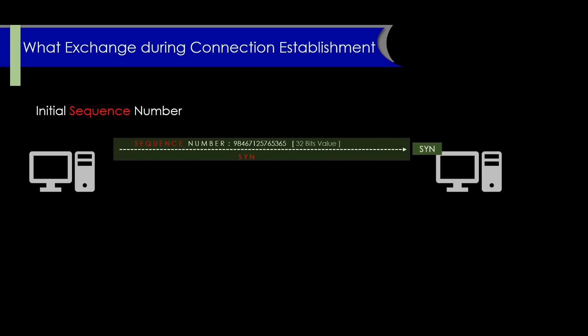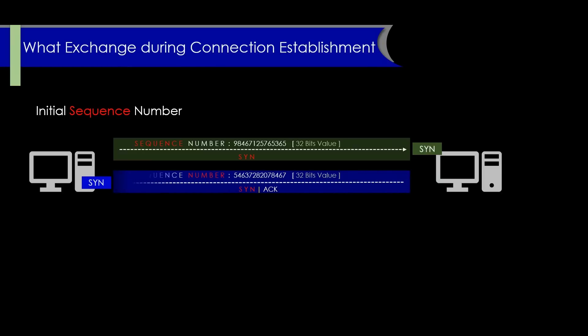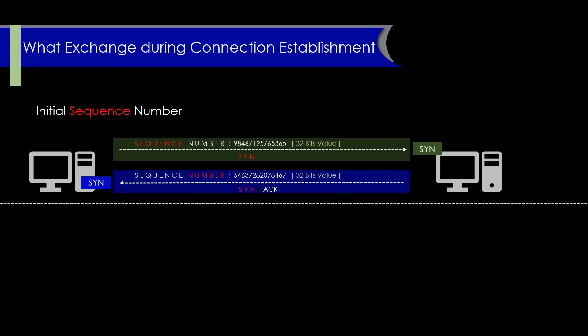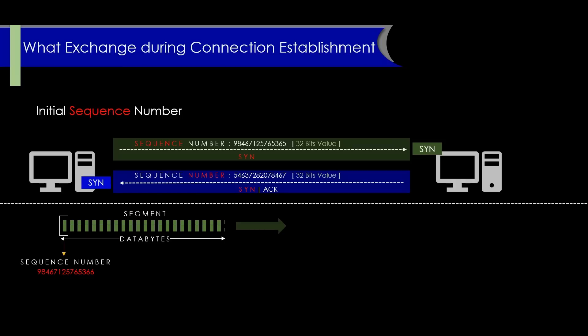The initial sequence number is generated and sent in a SYN packet as part of the three-way handshake to establish the connection. The receiving endpoint uses the ISN to start its own sequence number for the connection, and the two endpoints continue to increment the sequence number as data is sent back and forth. The ISN is the starting point of the sequence number for the first data segment sent in each direction.